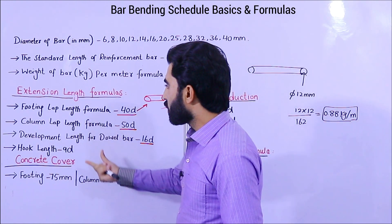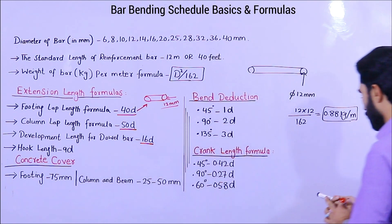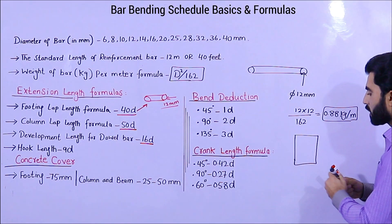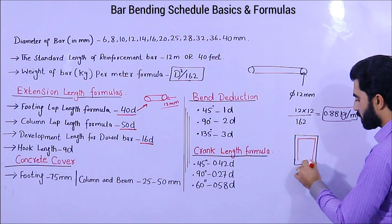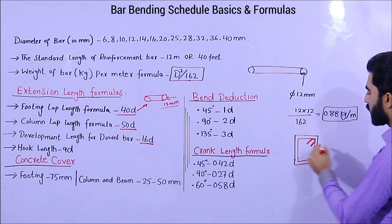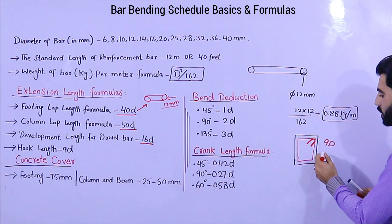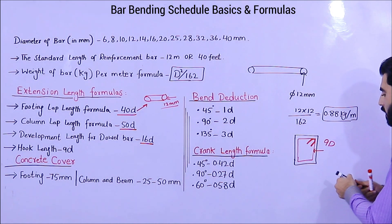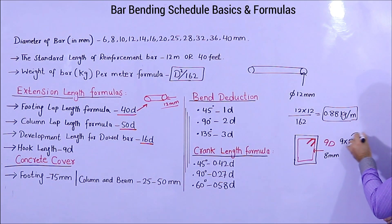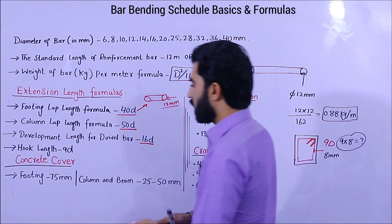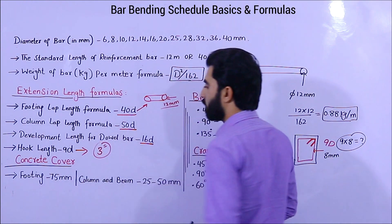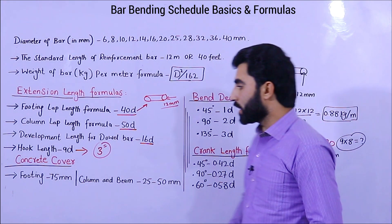The last extension length formula is hook length. Inside a beam we use stirrups, and the hook is bent at the end of stirrups. The hook length formula is 9D, where D is the diameter of the stirrup steel. For example, if you are using 8mm, then 9 × 8 gives you the hook length. If you are not using the 90-degree formula, the hook length should be a minimum of 3 inches.